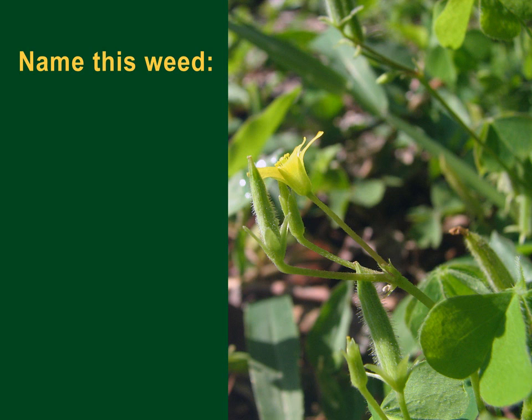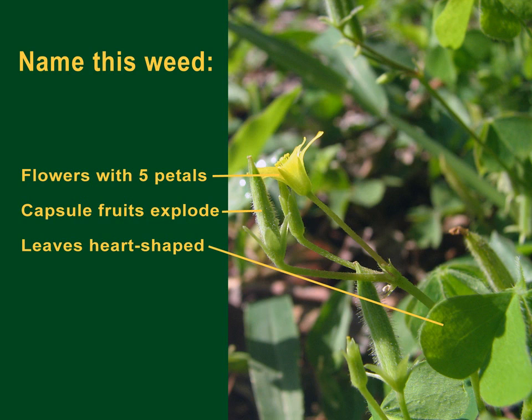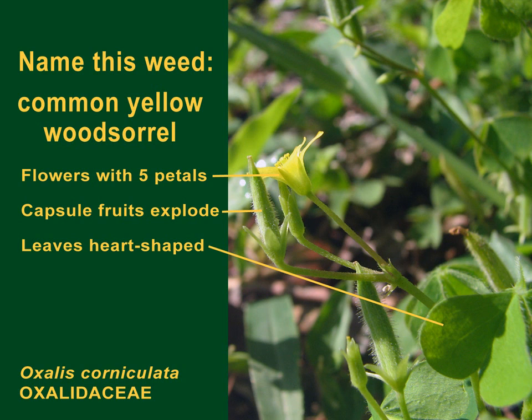Another broadleaf weed has an attractive yellow flower with five yellow petals. The fruit is a capsule which explodes to shed its seeds. The leaves are heart-shaped and they occur in threes, even though that's not obvious here. This weed is common yellow wood sorrel, often called oxalis, because it is in the Oxalidaceae family.